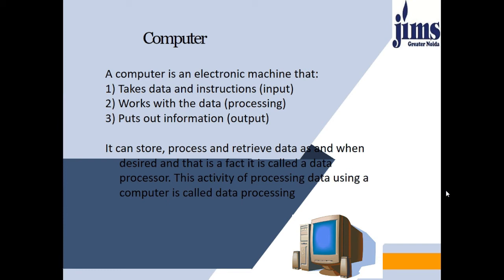A computer is an electronic machine that takes data and instructions as input. Here in the diagram we can see that the user is providing input to the computer system via various types of input devices — a mouse, a keyboard, a scanner, joystick, mic, webcam, and many more. Once the instruction is provided, the processing is performed by the CPU — the Central Processing Unit, also known as the processor.